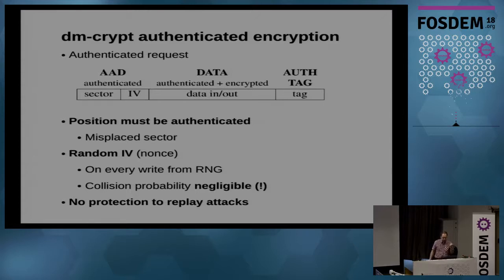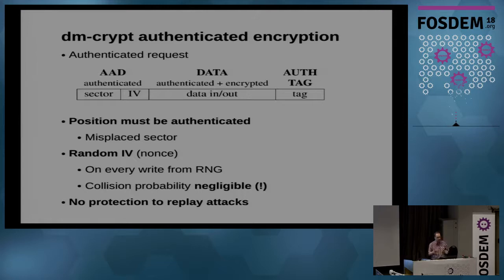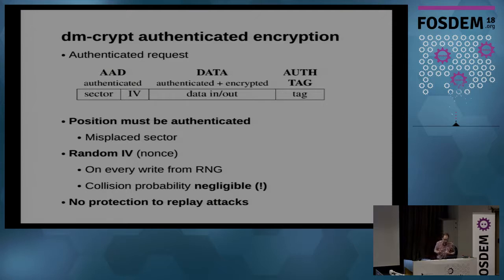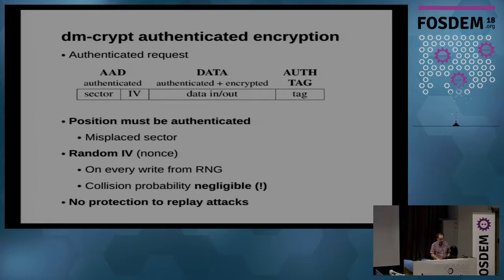For every sector request we need a randomized initialization vector — the tweak for the sector. The simplest solution: generate the full random IV from a random generator. The critical constraint is that the collision probability — generating the same random number for two sectors over the entire lifetime of the drive — must be negligible from a cryptographic standpoint. This is actually a problem with today's algorithms in the kernel. Also, this solution does not prevent replay attacks: you can take an old valid sector with correct checksums and replace it. Preventing replay attacks requires separate trusted storage, which we're not implementing.